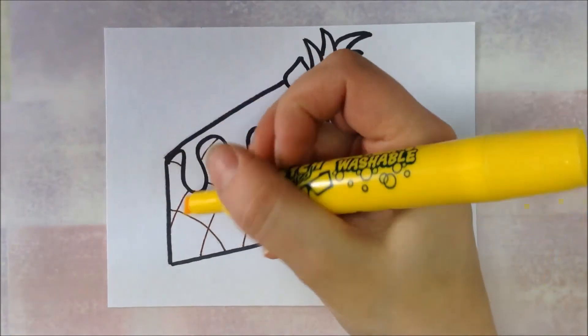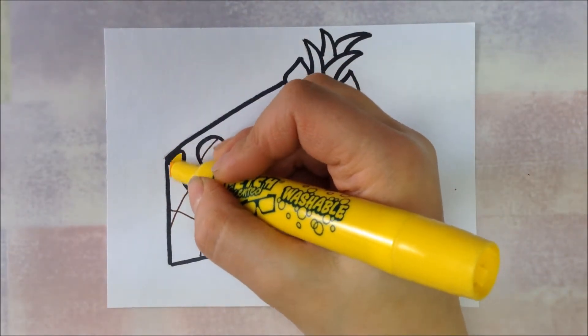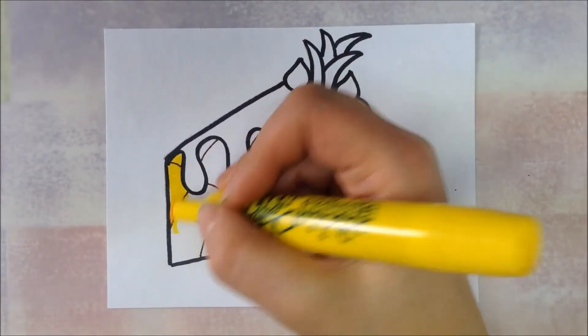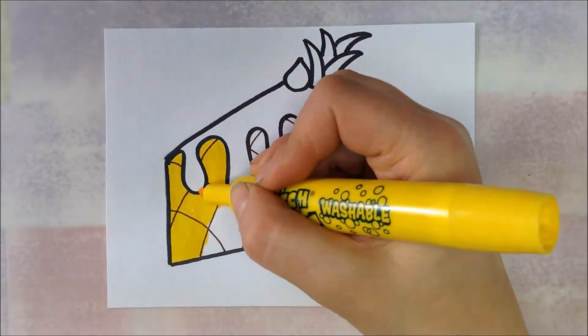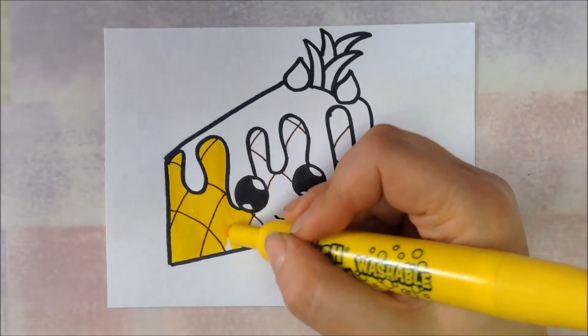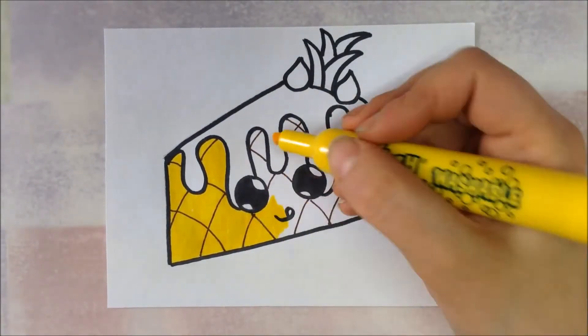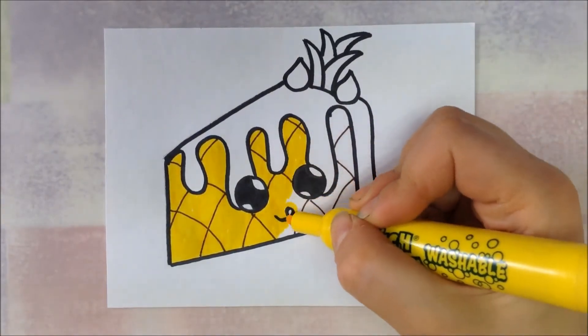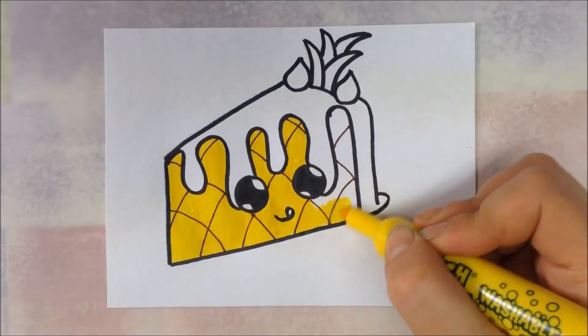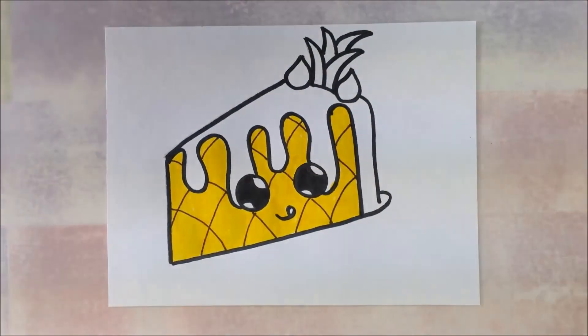And then we're going to start coloring with a yellow marker. I'll speed this up so you don't have to watch me color the whole time. You can go right over the brown permanent marker lines. They're not going to smear. Makes it much easier for coloring if you can go right over them.